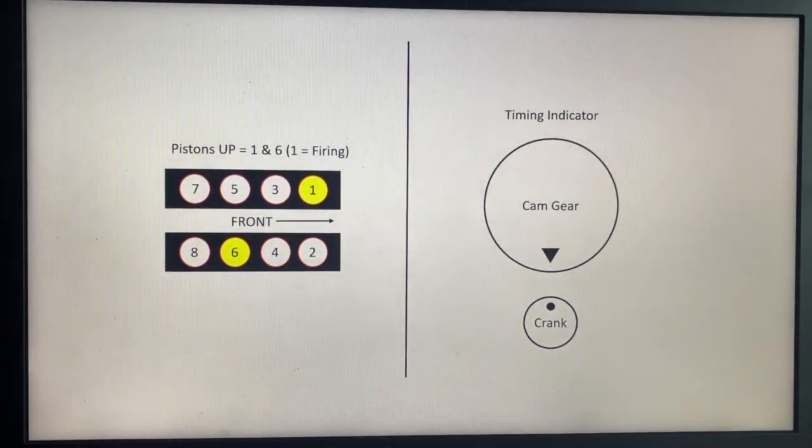So showing you that real quick: number one becomes the firing cylinder and number six is also at top dead center at the same time. At this position of the timing indicator, this is the time to change number one and number six valve springs.